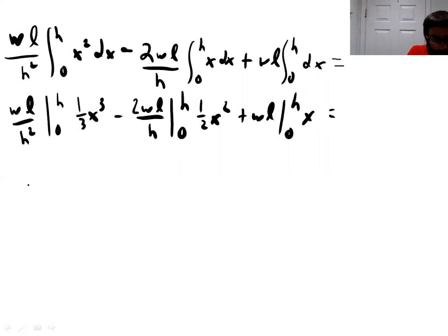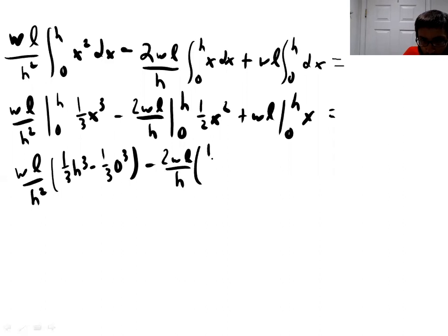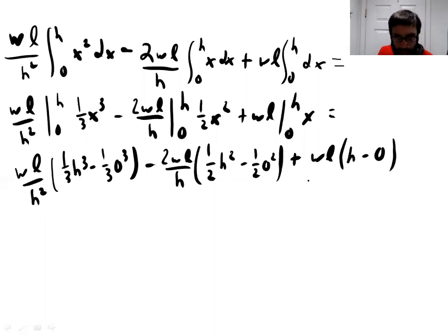And so let's plug in our values of H and 0 for all of these things, all of these terms. We're going to get 1 third H cubed minus 1 third 0 cubed minus 2 WL over H times 1 half H squared minus 1 half 0 squared plus WL times H minus 0. And so a lot of these terms are going to go away.